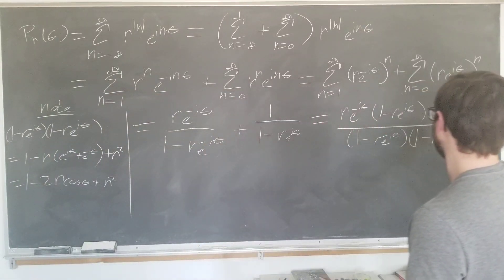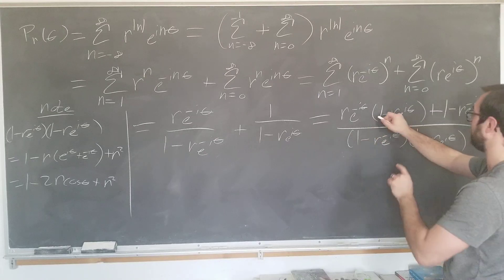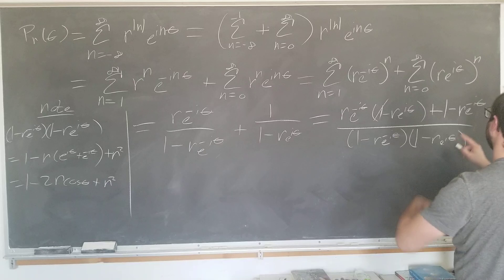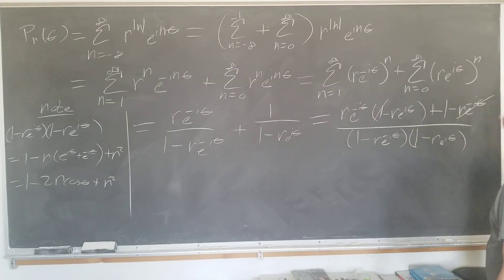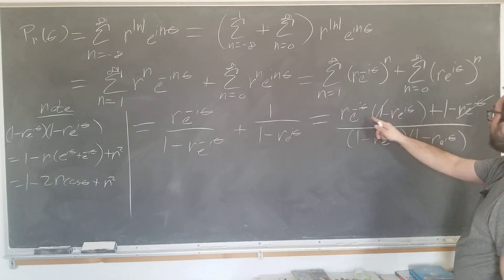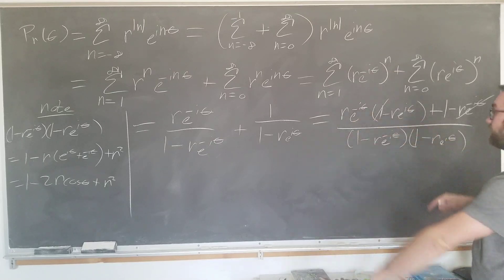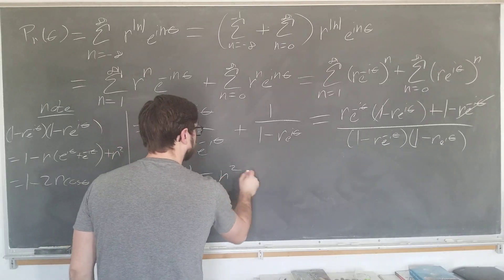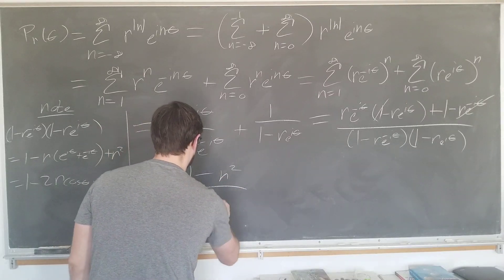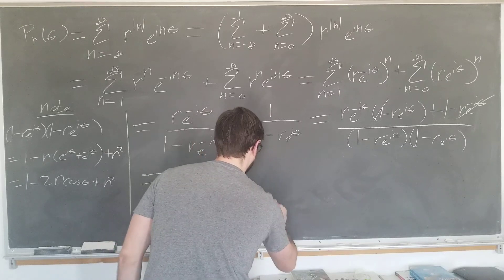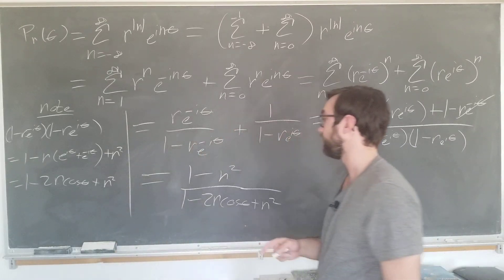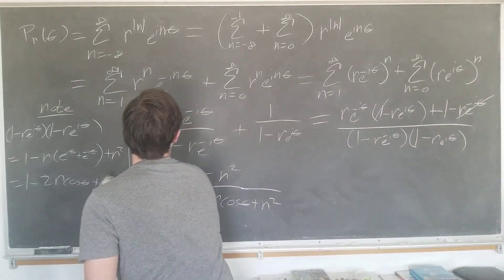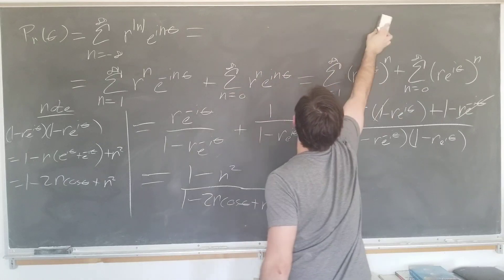So now we want to simplify the numerator. We see that a couple terms cancel. This term here, r e to the minus i theta, actually cancels with this term. So we get 1 minus r squared here, since these two are going to cancel again. We have our final result. This is the form that you would usually see the kernel in. It's the closed form of the kernel, which we're going to write up here. And this is one of the main results of today's lecture.